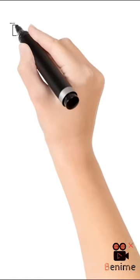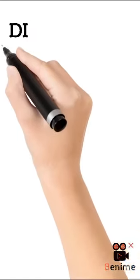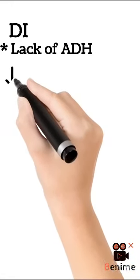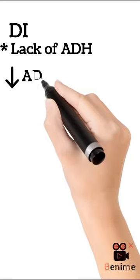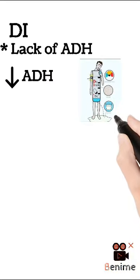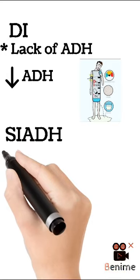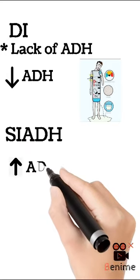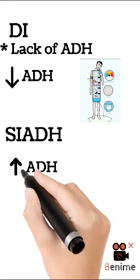Diabetes insipidus. In diabetes insipidus, there is decreased secretion of antidiuretic hormone from the posterior pituitary gland or kidneys are resistant to ADH and are unable to concentrate urine. On the other hand, in the syndrome of inappropriate diuretic hormone, we have an increase in antidiuretic hormone.